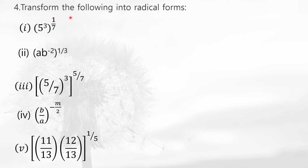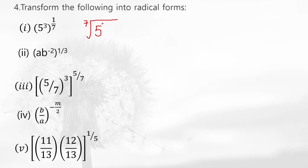Now question 4: transform the following into radical forms. These are all in exponential form and you have to convert them back into radical form using roots. Remember: 1 by 7 means the seventh root, 1 by 3 means cube root, 1 by 4 means fourth root, 1 by 5 means fifth root — and so on. For the first one with the seventh root, you write the radical with index 7 and the number 5 cubed inside. For the next one with cube root, you write the radical with index 3 and AB to the power minus 2 inside.